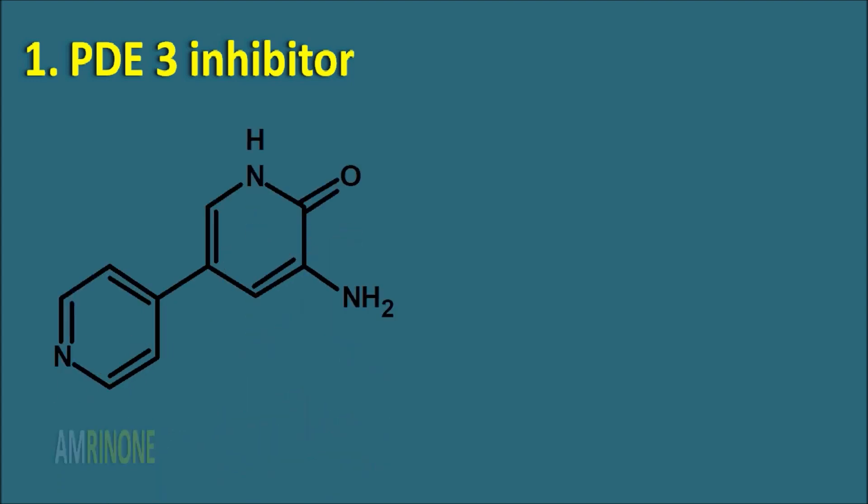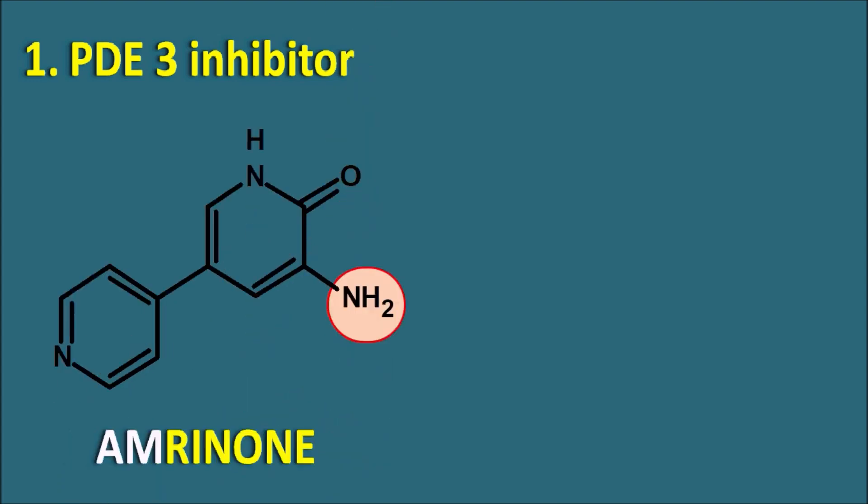The first one is amrinone. In this structure, it is a bipyridine with an amine group. This amine is indicated within the name as the prefix 'am,' so amrinone is an amine-containing bipyridine.